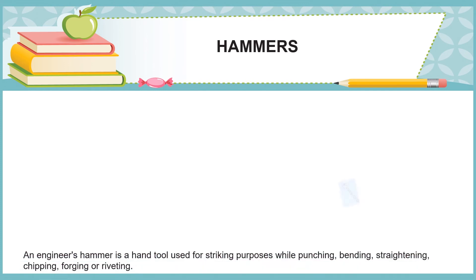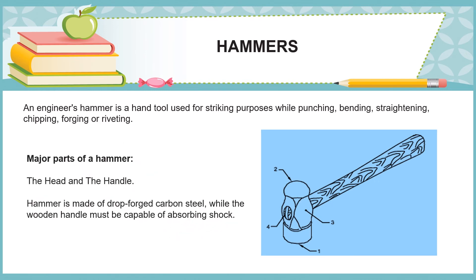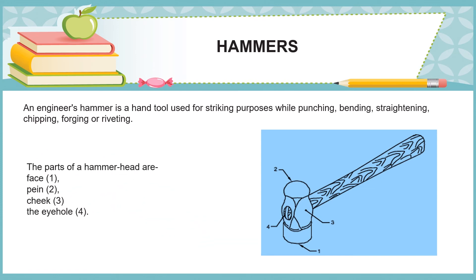Hammers: an engineer's hammer is a hand tool used for striking purposes while punching, bending, straightening, chipping, forging, or riveting. The major parts of a hammer are the head and the handle. The hammer head is made of drop-forged carbon steel, while the wooden handle must be capable of absorbing shock. The parts of a hammer head are the face, peen, cheek, and the eye hole.